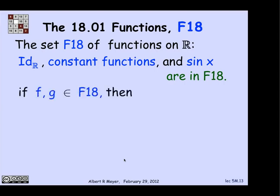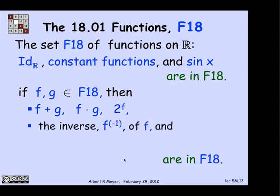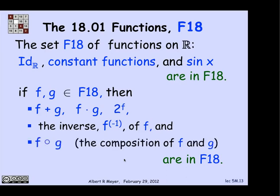Then here are the constructor rules. If I have two functions that are in F18, I can add them, multiply them, or take two to the F, where F is in there. And those will all also be functions in F18. So I can start building up a bunch of interesting stuff, like polynomials and exponentials. In addition, if I have a function that's in F18, I can take its inverse, at least insofar as the inverse is defined in a function. And I can also compose two functions that are in F18 to get another one.